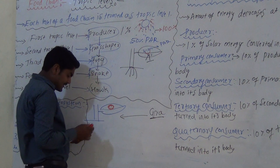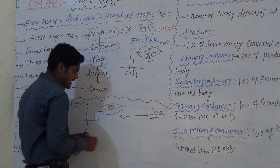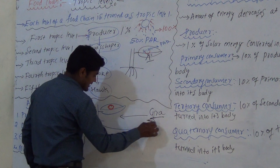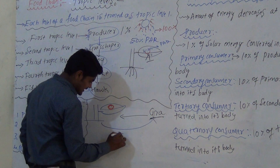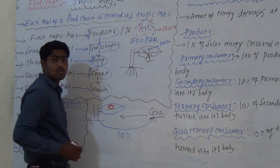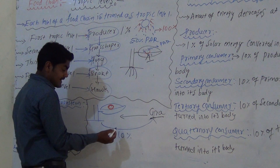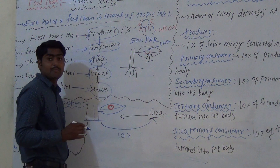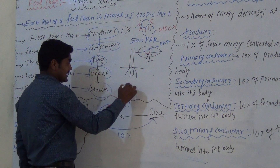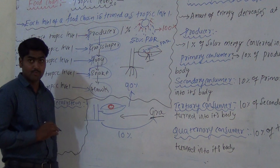The grasshopper consumes the leaf. After consumption, 70% of energy is lost as heat. Only 10% of energy is passed to the next Trophic Level. So out of 100%, only 10% energy goes to the next Trophic Level, and 90% of energy is lost as heat.